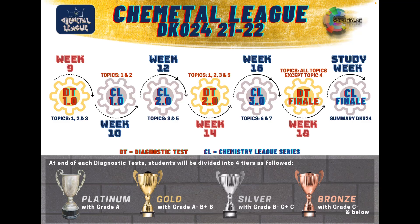Assalamualaikum and salam sejahtera everyone. This is a tutorial on how you can check your tier in the Chemical Leak at the end of each diagnostic test. By now, you should know that the Chemical Leak is divided into 4 tiers: one is platinum, two is gold, three is silver, and followed by bronze.